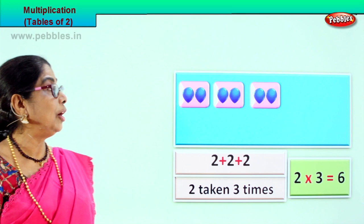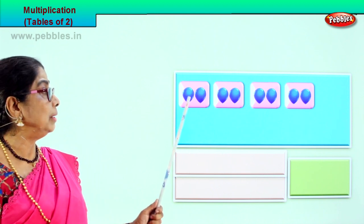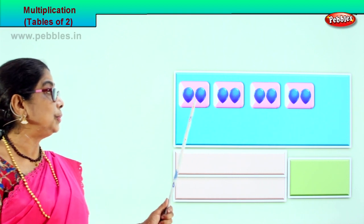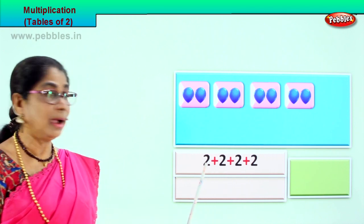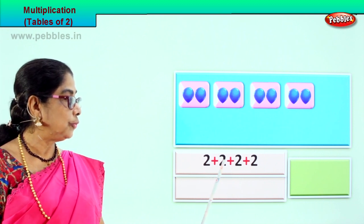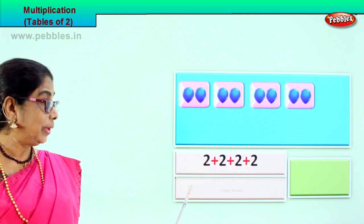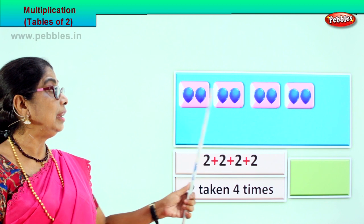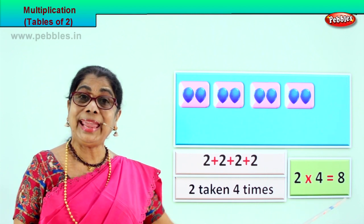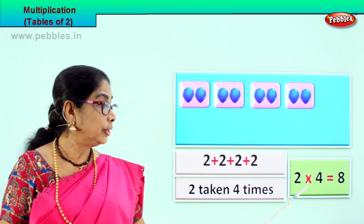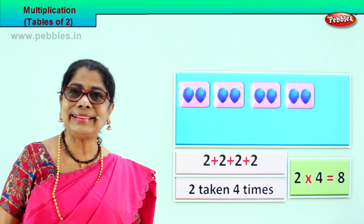Let's go to another grouping of two. Now you have taken how many times? Two taken four times — one, two, three, four. That is, two plus two is four, plus two is six, plus two is eight. Two plus two plus two plus two. Two plus two: four. Four plus two: six. Six plus two: eight. Two taken how many times? Four times. So we write it here: two taken four times. That is, two into four equals eight. Two fours are eight. Two into four is equal to eight. Two fours are eight. Two taken how many times? Four times. Two fours are eight.